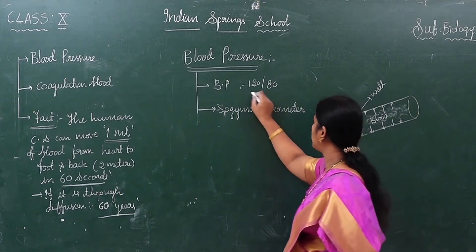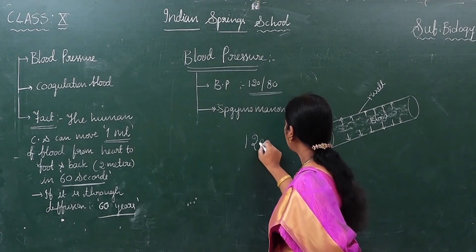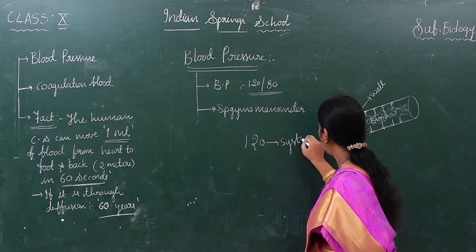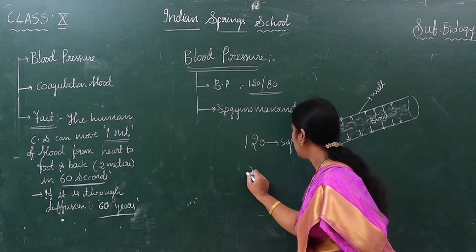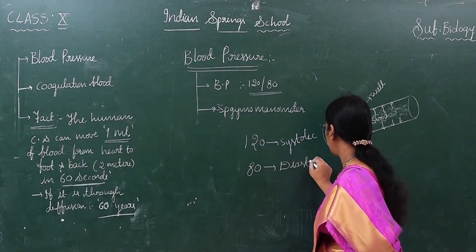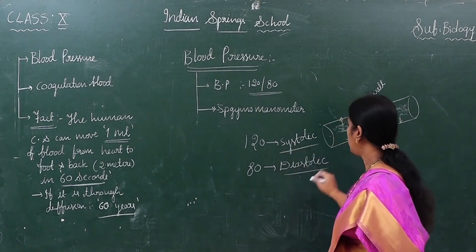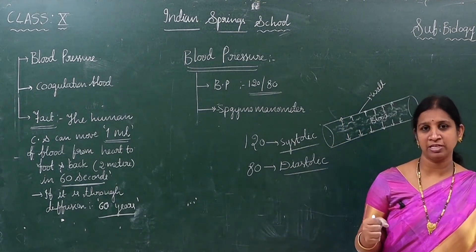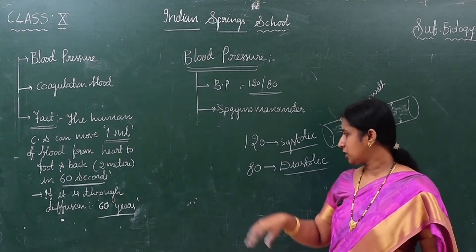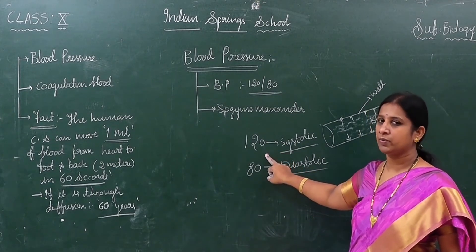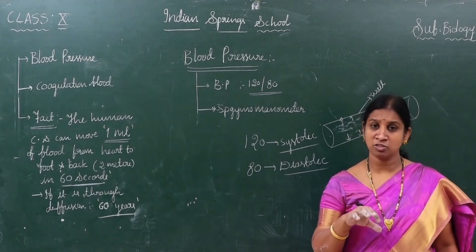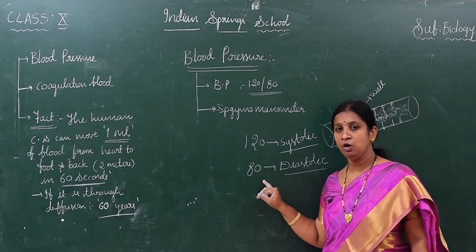The normal BP is 120 by 80. Here, 120 indicates systolic pressure and 80 denotes diastolic pressure. Systole means the contraction phase of the heart — when the heart contracts, blood flows forcibly, so systolic pressure is higher at 120. Diastolic means the resting phase, so blood flows a little slower and diastolic pressure is lower at 80.